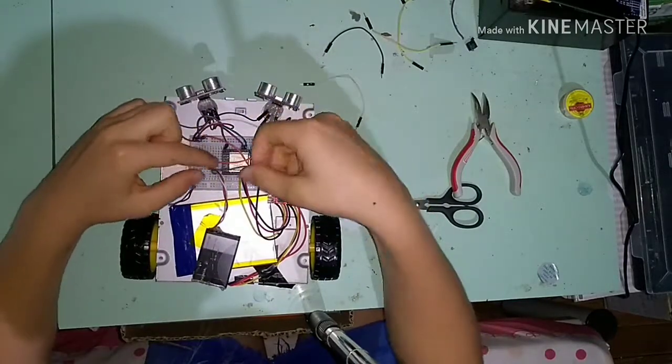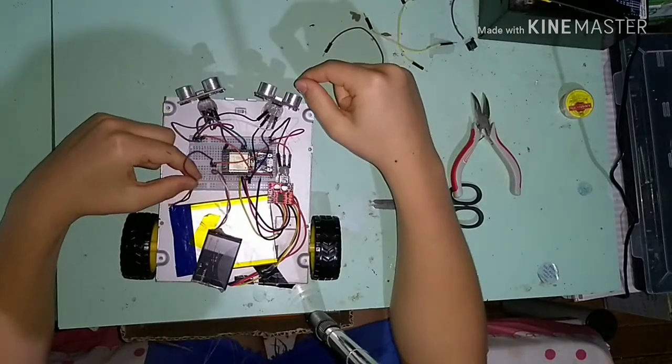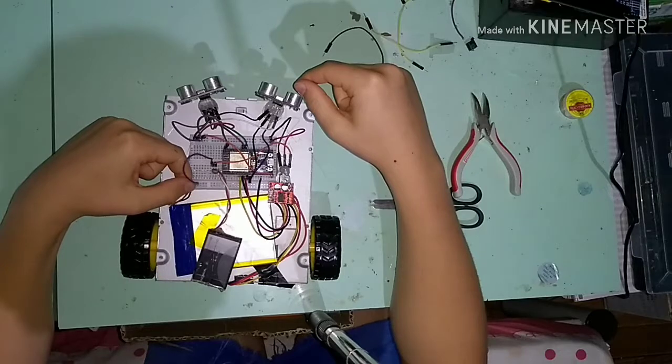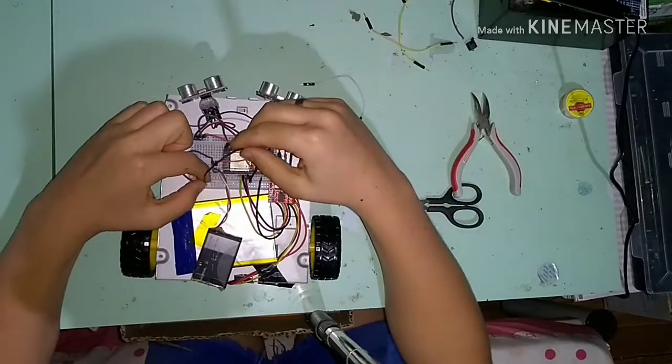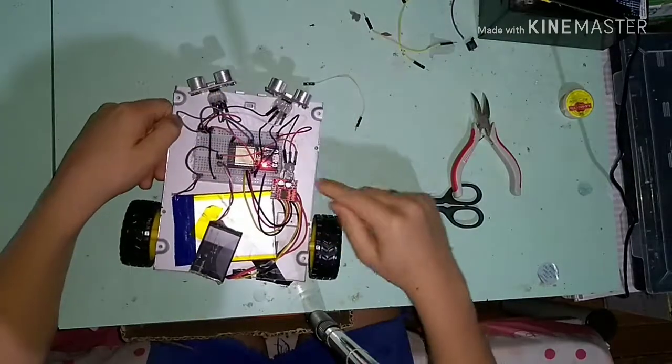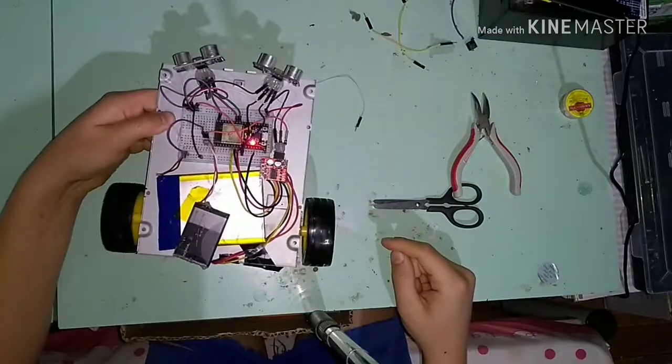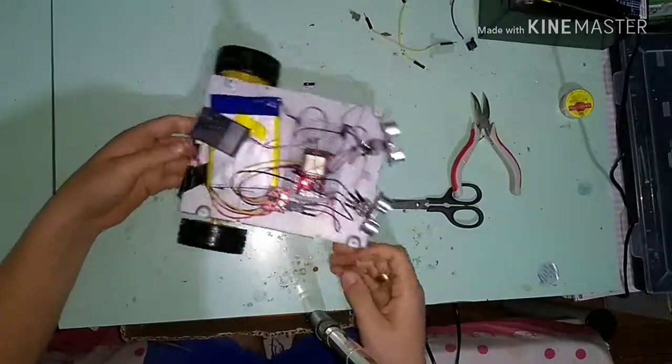Agora liguemos o positivo dessa outra bateria. E daí liguemos as duas em série. Peguemos o positivo da bateria que tá ligada na ponte H e liguemos ela com a outra, e assim vai indo. Liguei em série. E aí já começou a andar.